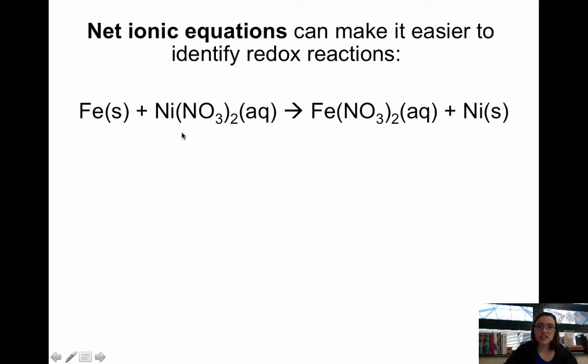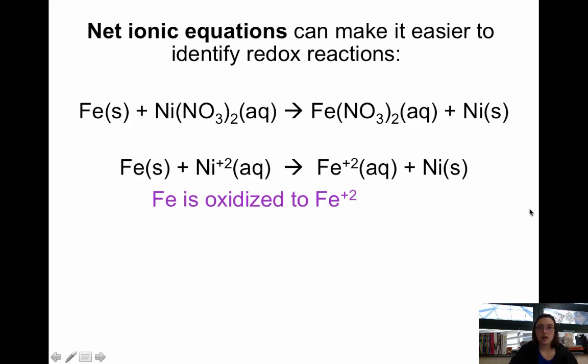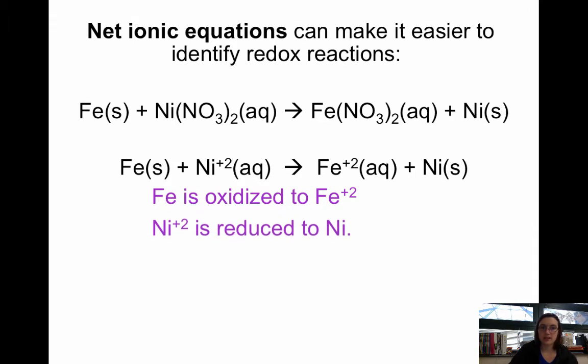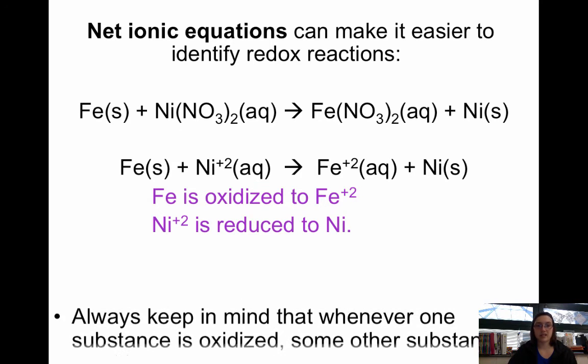For example, let's say that we have iron reacting with nickel nitrate, nickel two nitrate, and then you form iron two nitrate and nickel metal. If we rewrite this as a net ionic, we get Fe plus Ni2+ yields Fe2+ plus Ni solid. Notice this is very easy for us to see. It goes from zero to plus two and plus two to zero. Iron is oxidized to iron two plus, and nickel two plus is reduced to nickel metal. Notice how the net ionic equation makes it much easier for us to see that redox is happening.